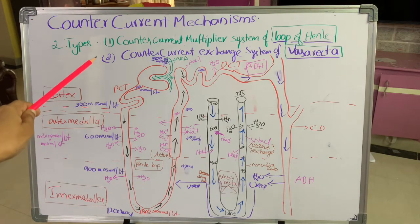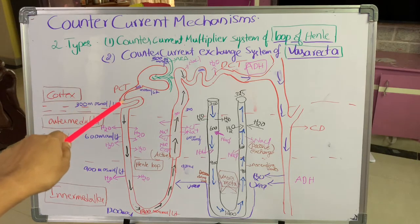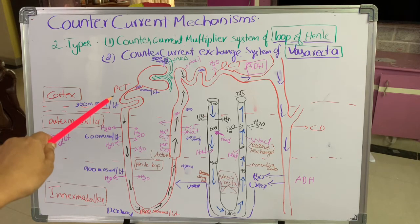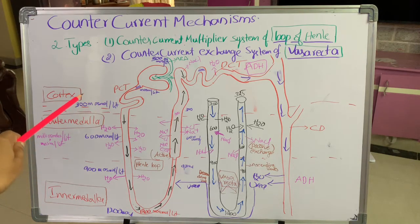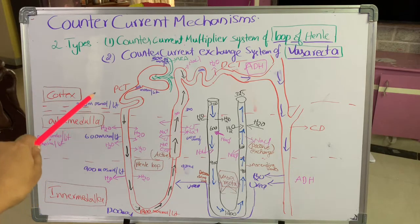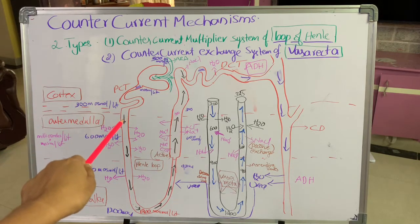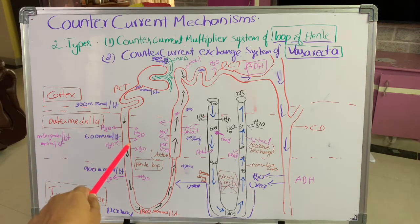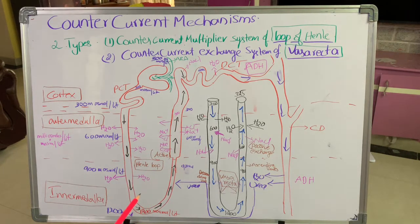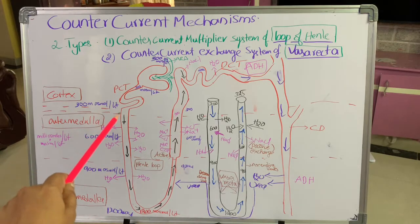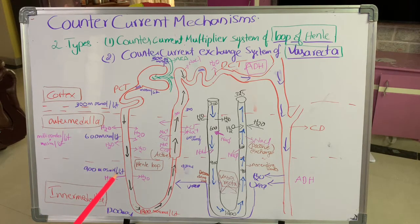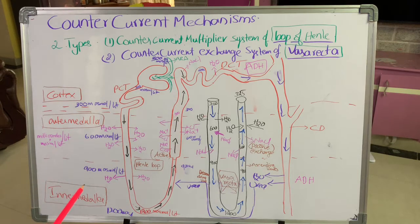As the primary urine passes from the Bowman's capsule into the proximal convoluted tubule, it is permeable to water and solutes, so water goes out into the interstitial fluid of the cortical region. It then moves towards the descending limb of Henle. As it goes deeper into the inner medulla, the walls of the descending limb are permeable to water, so water enters the interstitial fluid. As water leaves, osmolarity of the filtrate slowly increases.